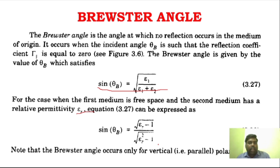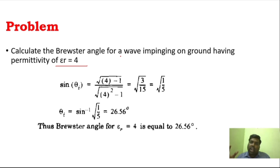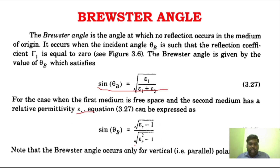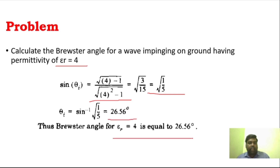We are going to see one particular problem on Brewster angle. Epsilon r is equal to 4. This means one medium is free space and another medium has an epsilon r of 4. So we use the second formula: epsilon r minus 1 over epsilon r squared minus 1. If you substitute 4 here and simplify, you get theta as sine inverse of a particular value, and you can calculate the angle. This is the Brewster angle for this particular problem — a very simple problem.